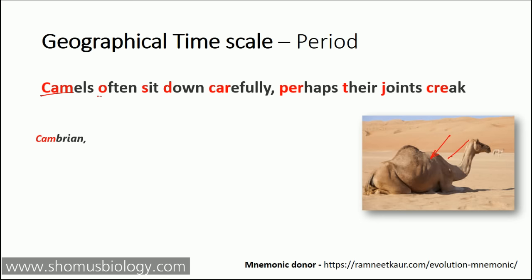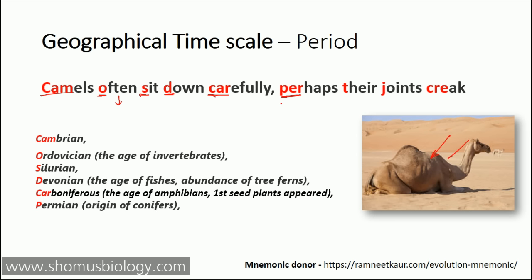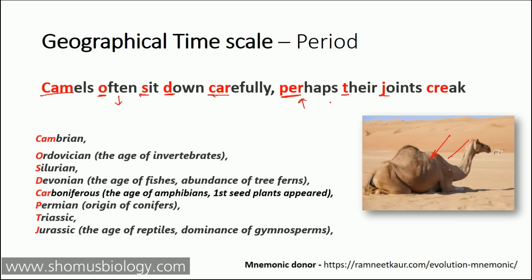'O' starts Ordovician — the age of invertebrates. Then 'S' gives Silurian. Then 'D' gives Devonian — the age of fishes and abundance of ferns. Then 'Car' gives Carboniferous — the age of amphibians, when the first seed plants appeared. Then 'Per' gives Permian — origin of conifers. Then 'T' gives Triassic. Then 'J' gives Jurassic — the age of reptiles and dominance of gymnosperms. And 'Cre' at the end gives Cretaceous — the dominance of flowering plants and mammals.